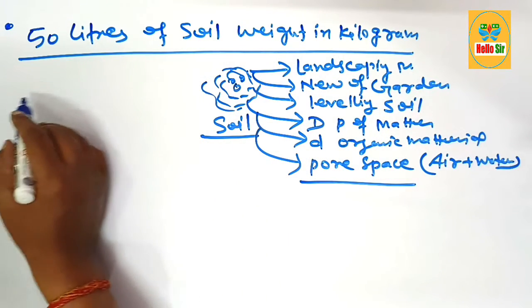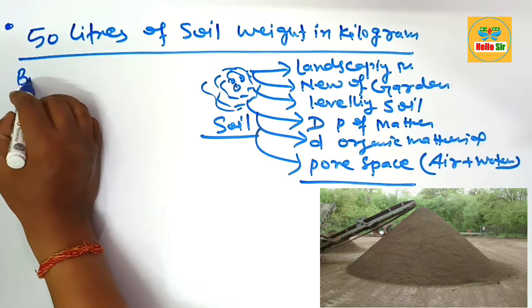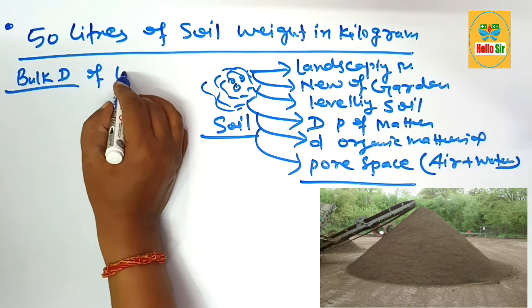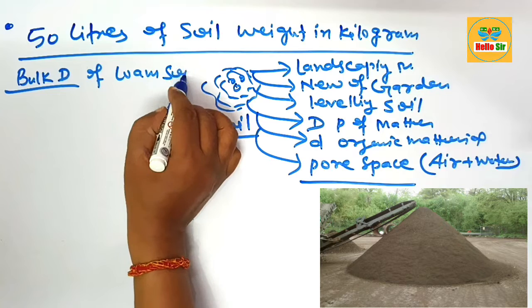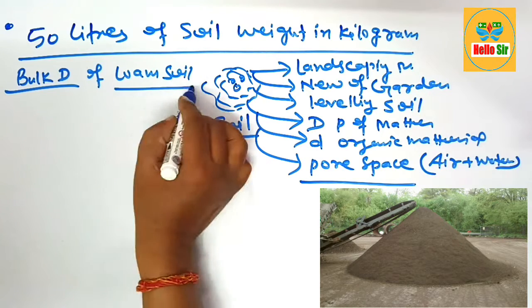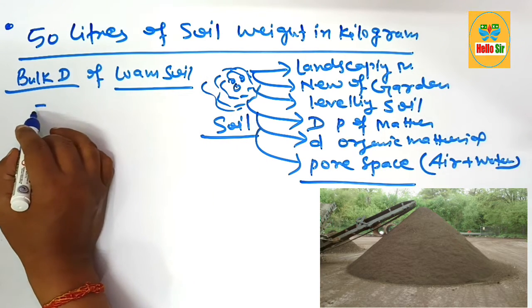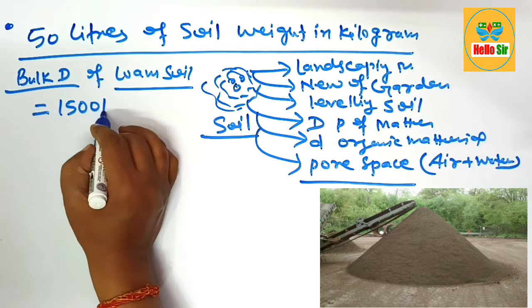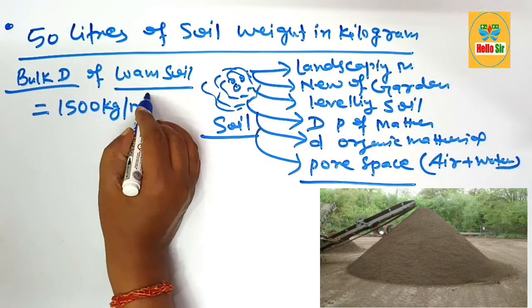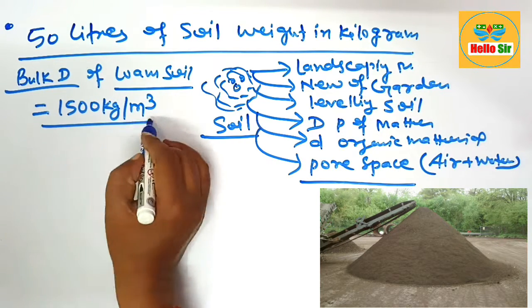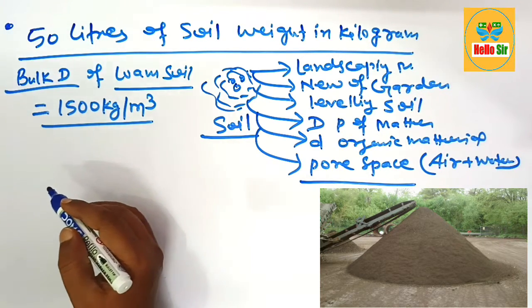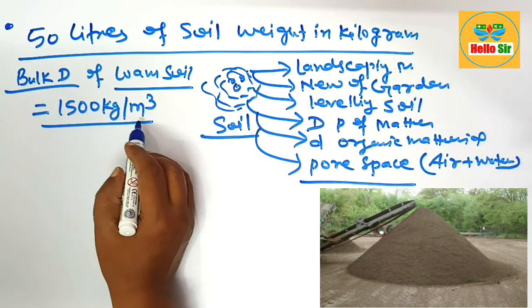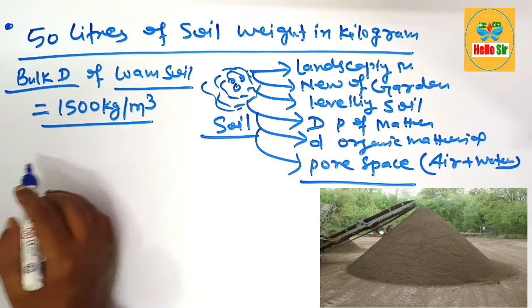Here we take the bulk density of loam soil. The bulk density of loam soil is typically about 1500 kilogram per cubic meter.